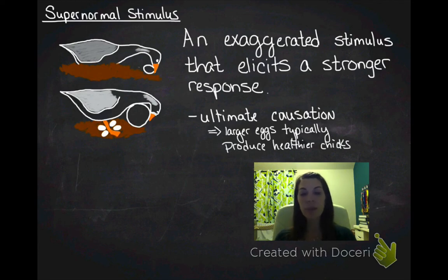That sign stimulus we've been talking about doesn't have to be the size or the color of something. There can be other signals, it could be chemical even. That's the supernormal stimulus. It is directly related to a response that has a sign stimulus. You have to have a sign stimulus that is going to trigger a response.